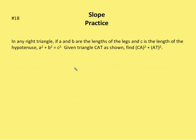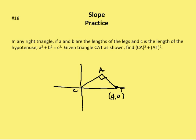In the second problem, we have a right triangle. If A and B are the lengths of the legs and C is the length of the hypotenuse, given triangle CAT, find CA plus AT. Point T is at coordinate (4, 0), so CT is 4 units — from the origin C to T. By the Pythagorean theorem, CA squared plus AT squared equals CT squared. Since CT squared equals 16, we get CA squared plus AT squared equals 16.